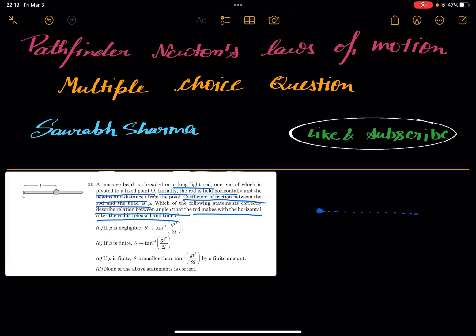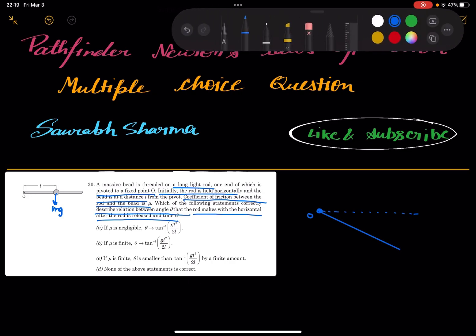But after releasing it horizontally, the mass because of this bead mass, this rod is going down. But this is pivoted at O. So it is going down because of the torque acting on the rod at point O. So now this is the bead. Let's say this is your bead.